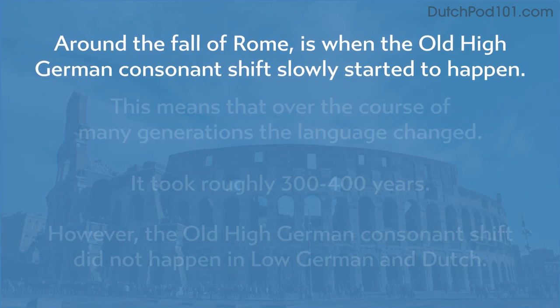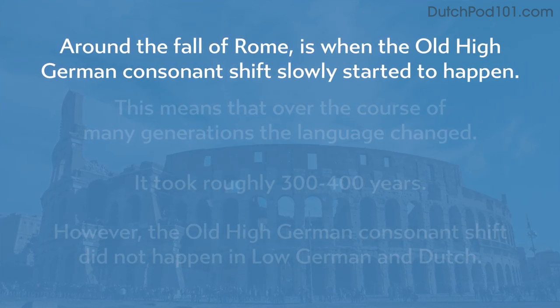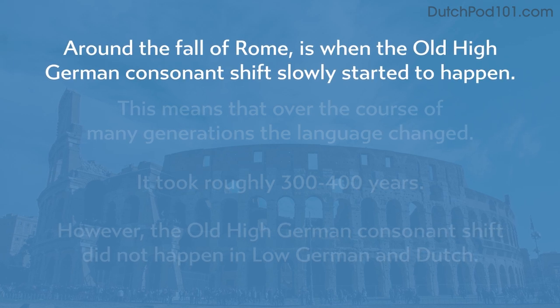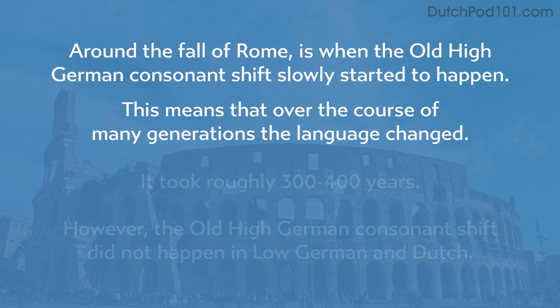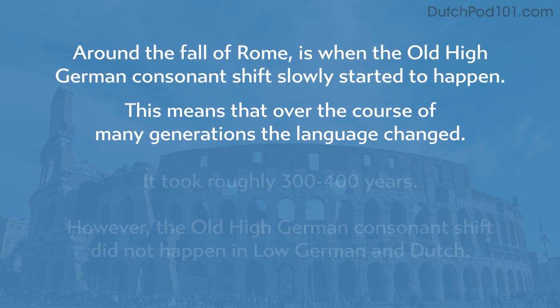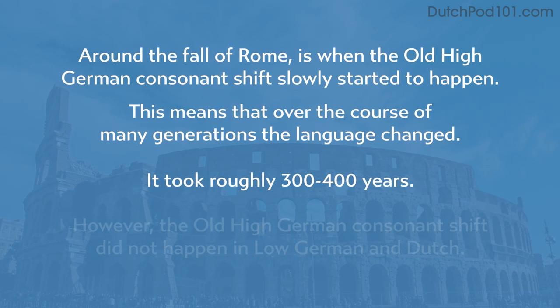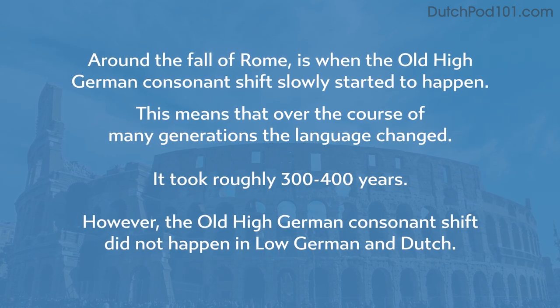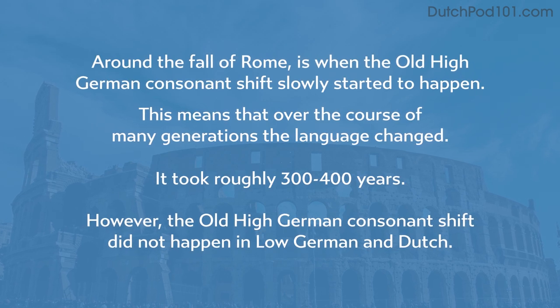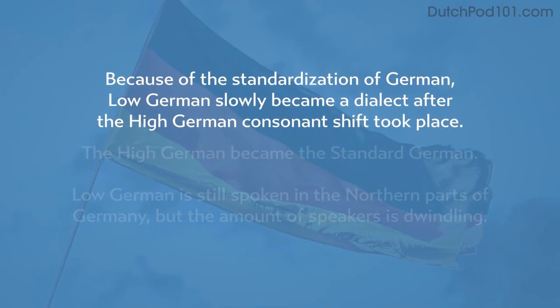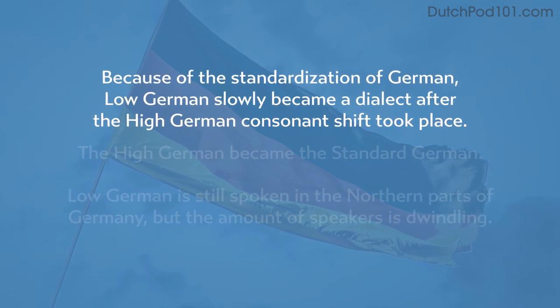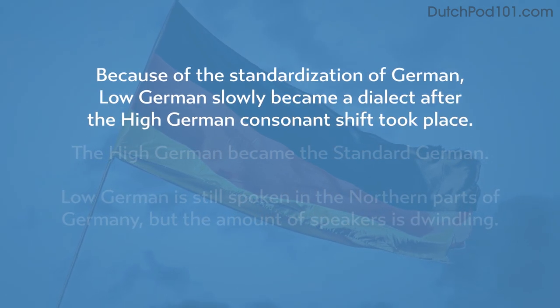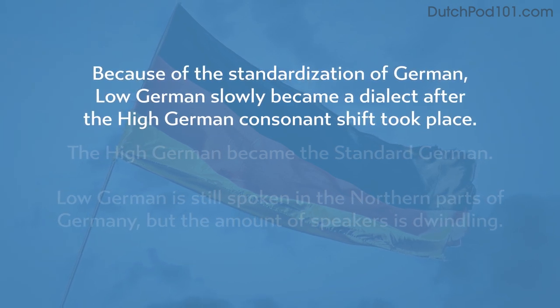Around the fall of Rome is when the high German consonant shift slowly started to happen. This means that over the course of many generations the language changed — it took roughly three to four hundred years. However, the high German consonant shift did not happen in Low German and Dutch. Low German slowly became a dialect after the high German consonant shift took place.